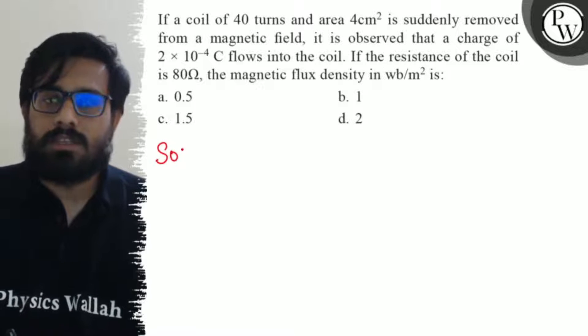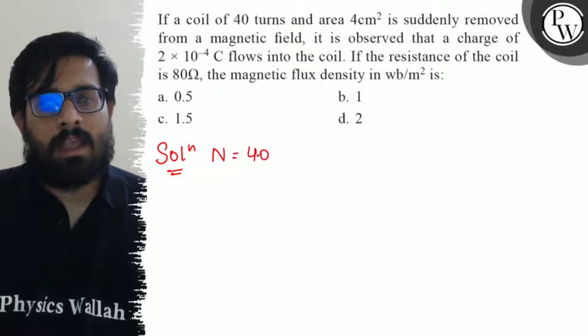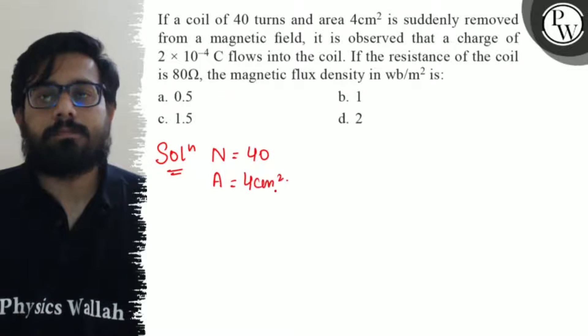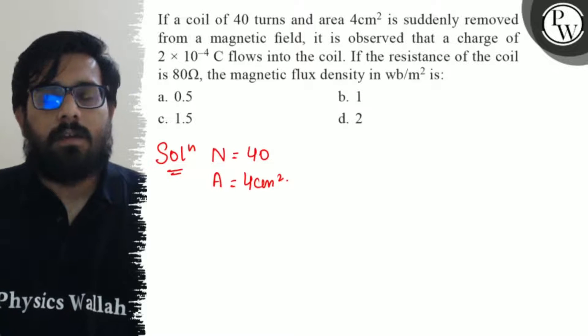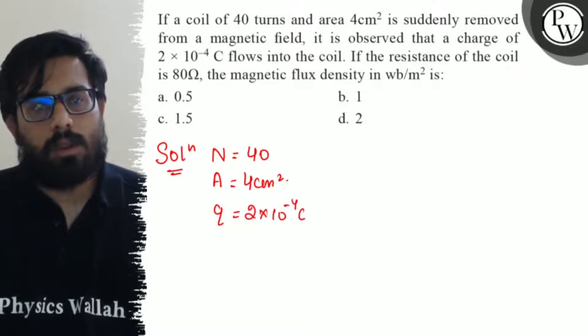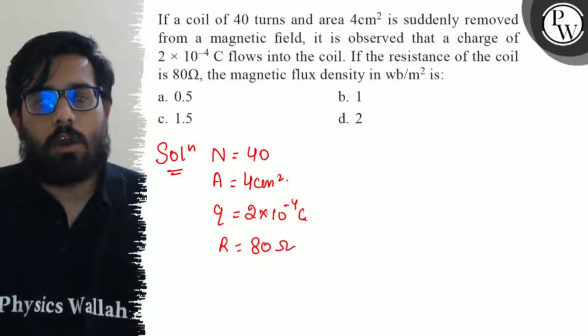So in this question we have a coil with number of turns 40, having an area of 4 centimeter square. When it is suddenly removed from the magnetic field, it is observed that we have a charge q of 2×10⁻⁴ coulomb, and the resistance is 80 ohm.